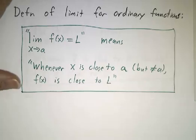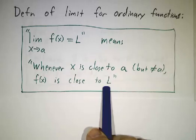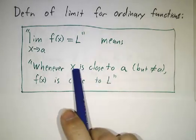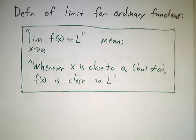Now if we want to make this precise, we have to say how close is close. You tell me how close to L you want to be. That's a number called epsilon. And I'll tell you how close to a you have to be to make that happen.